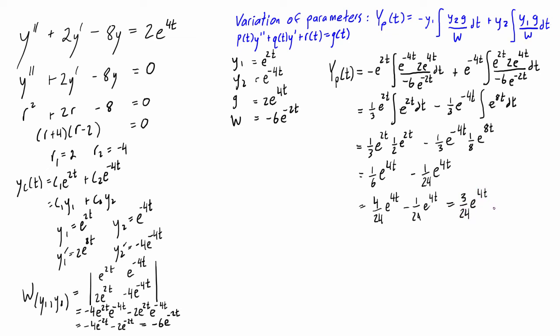So this is three twenty-fourths e to the 4t. And three twenty-fourths is just one eighth e to the 4t.